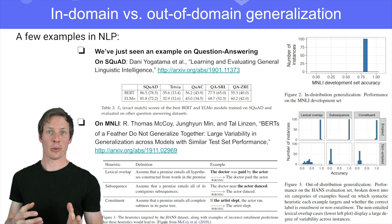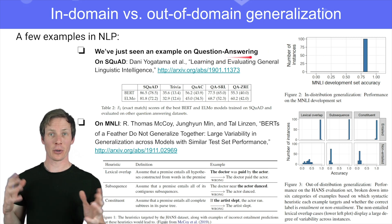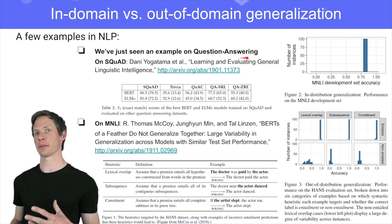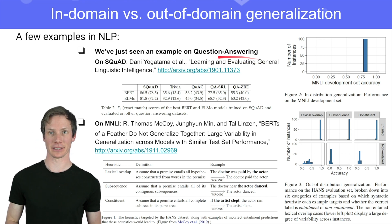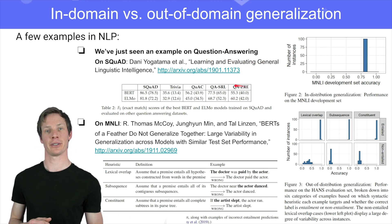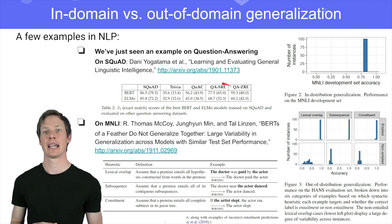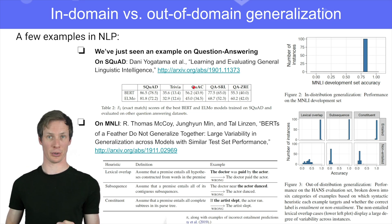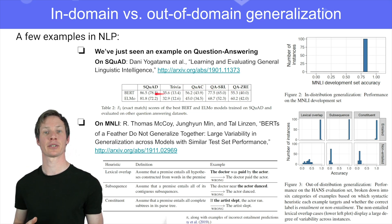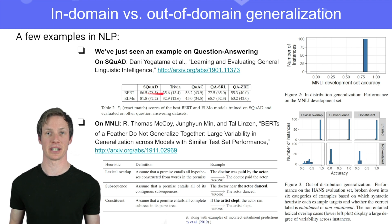We've trained our model on question-answering datasets. Now we are experimenting with real-life, where question-answering is different — the domain is different. The language people use is not Wikipedia language. And we see there is a strong performance drop, because our model is not really capable of out-of-domain generalization.